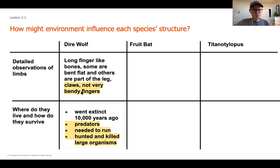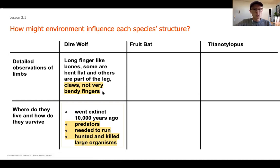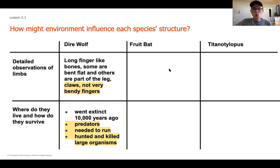The wolf needed to run and hunt and kill large organisms. I noticed that it has some bent flat parts and other parts of its legs that are not very bent. I thought about it as a spring - some things that were squishy and could move as it's running to cushion its running ability. But it also needed bones that were long and hard to provide structure and push off the ground.